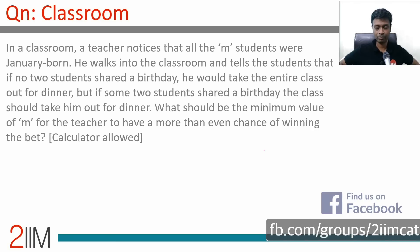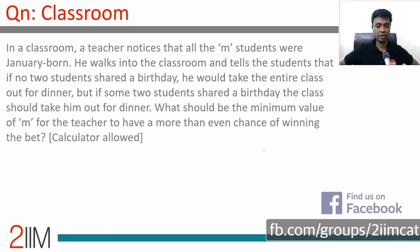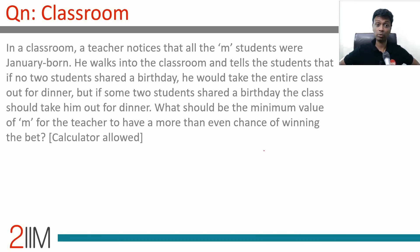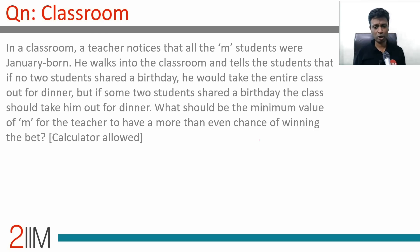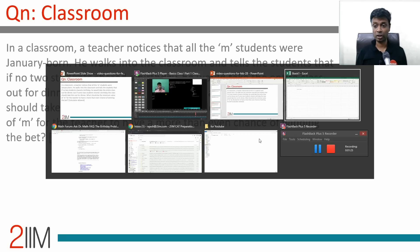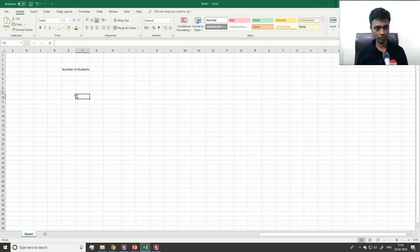Let's go through this question again. A teacher notices all M students were January-born. He tells the students: if no two students shared a birthday, he would take the entire class out for dinner, but if some two students shared a birthday, the class should take him out. What is the minimum value of M for the teacher to have a more than even chance — more than 50% — of winning the bet? I'm going to use Excel as a more sophisticated calculator.